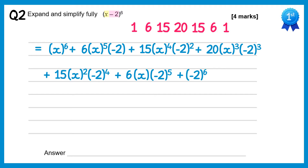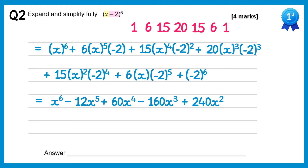So now we'll just go through and simplify. We've got x to the power 6. 6 times negative 2 is negative 12, so negative 12x to the power 5. Negative 2 squared is 4, times 15 gives 60, so plus 60x to the power 4. Negative 2 cubed is negative 8, times 20 is negative 160, so negative 160x cubed. 2 to the power 4 is 16, times 15 gives 240, so 240x squared. Negative 2 to the power 5 is negative 32, times 6 gives negative 192x. And negative 2 to the power 6 is 64, so plus 64.